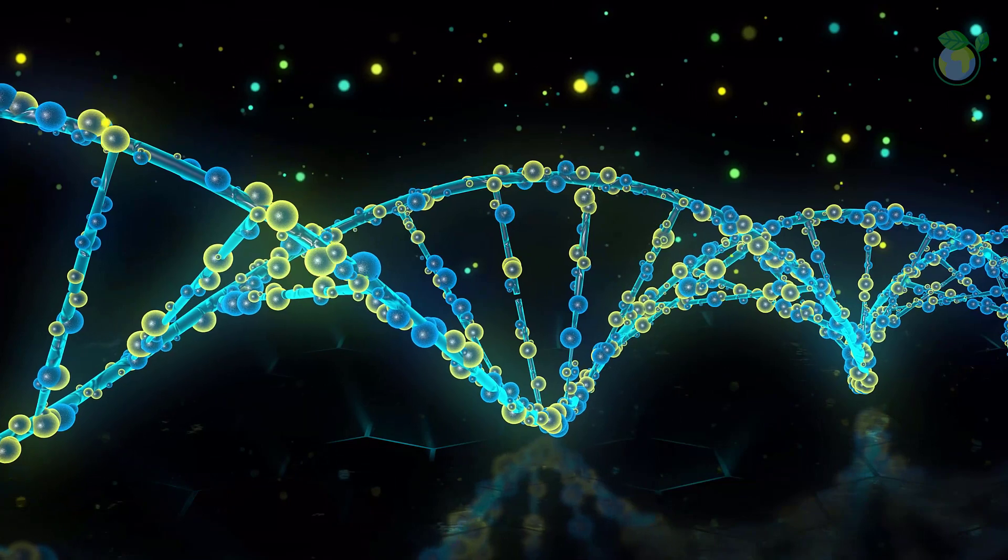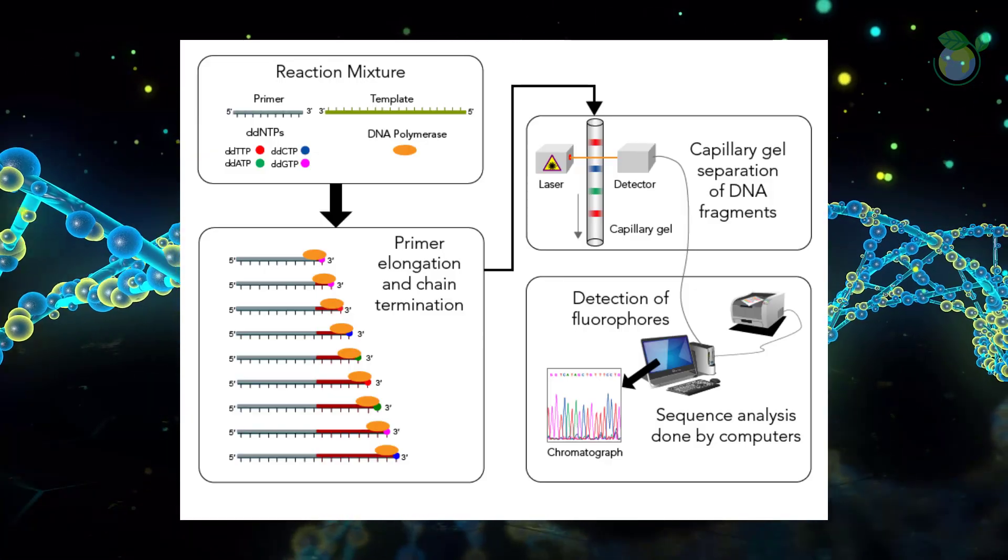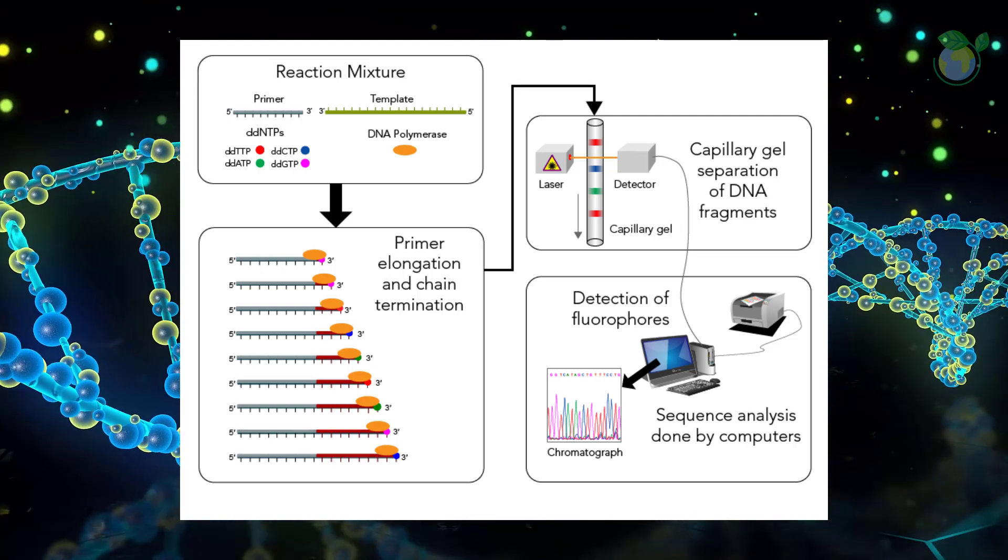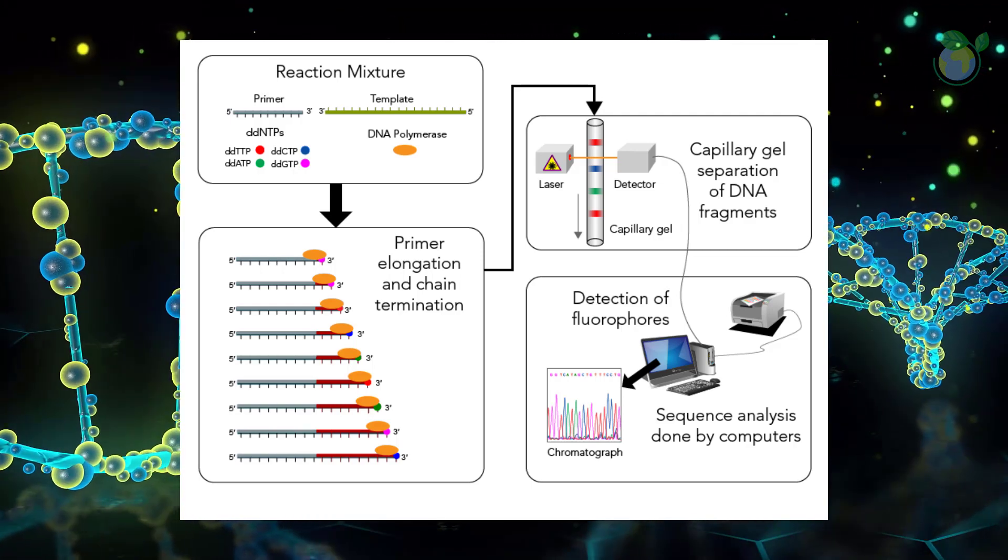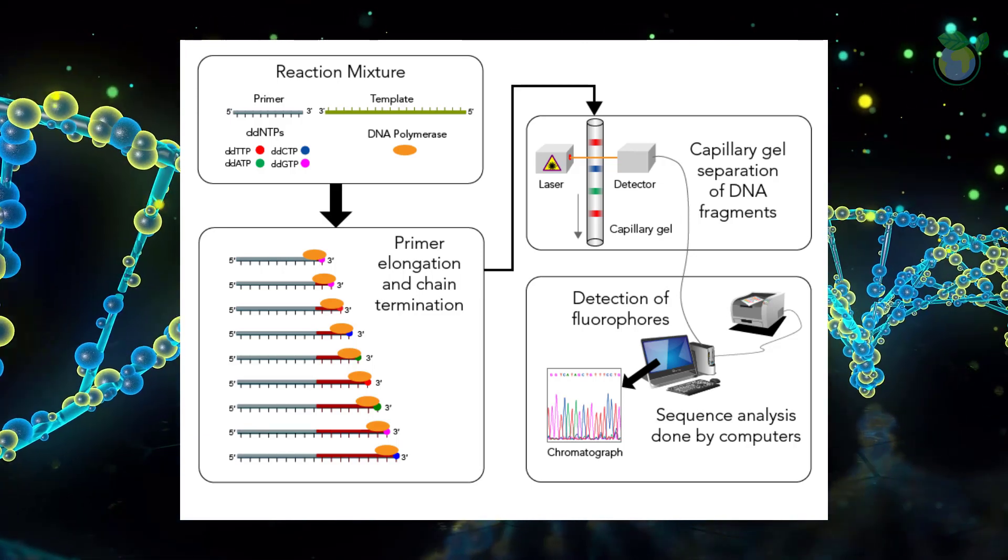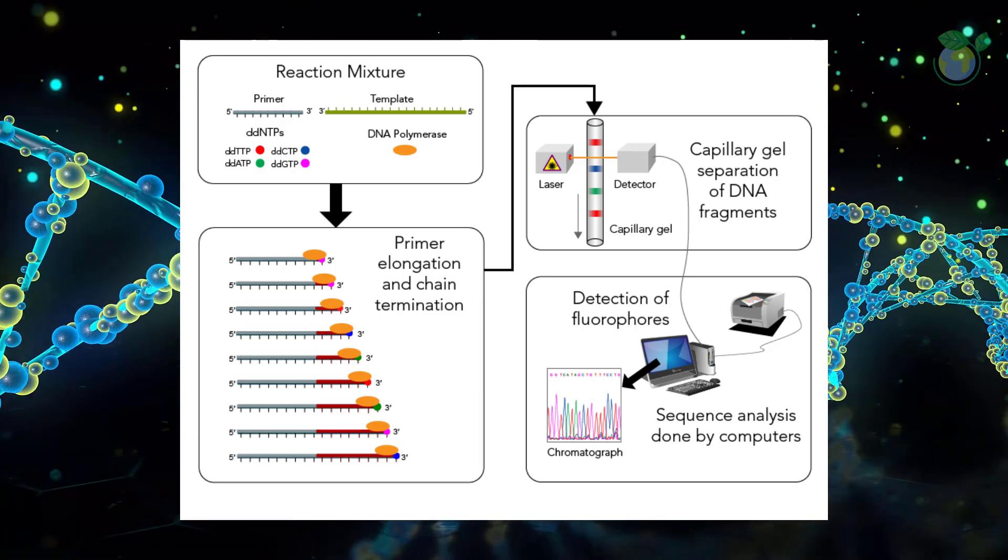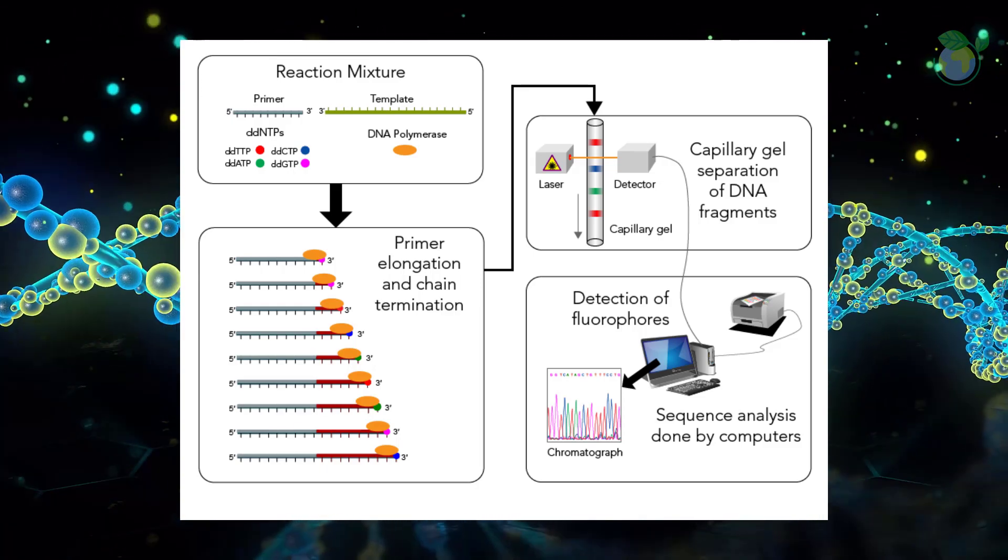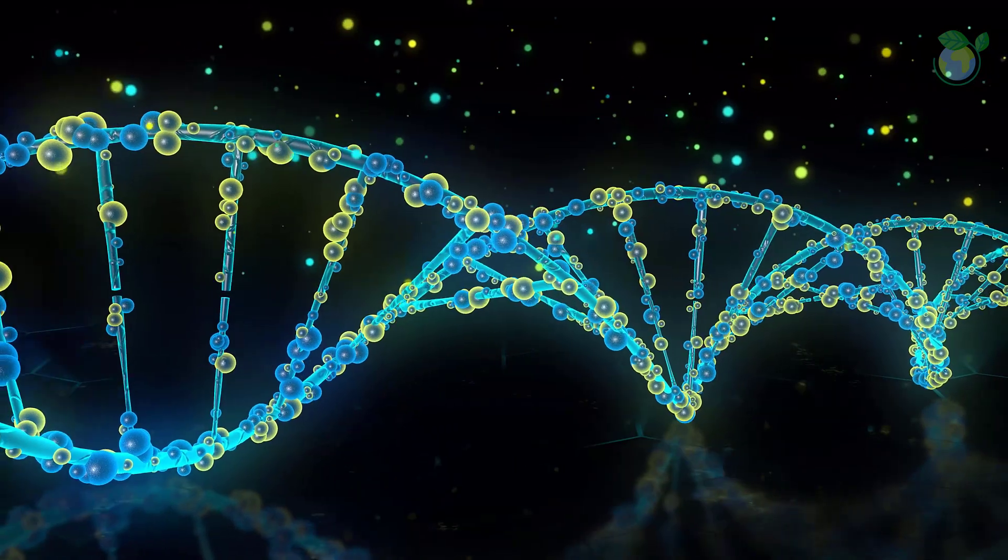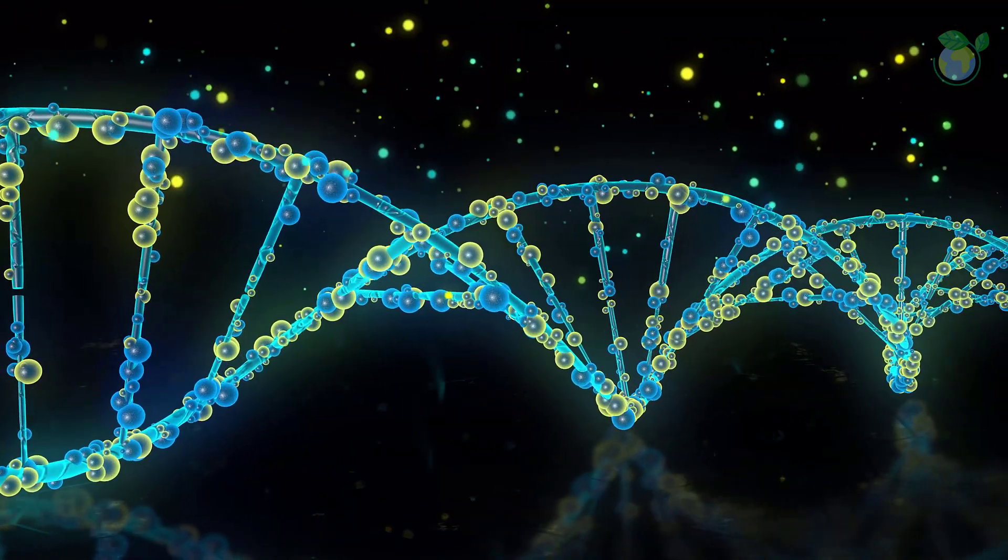Today, automated Sanger sequencing is still in use, primarily in clinical labs where it is acceptable to have low throughput and higher per sample cost. Despite the success of the Human Genome Project, the cost of automated Sanger sequencing, also known as capillary electrophoresis, remained too high to allow for large-scale sequencing projects.